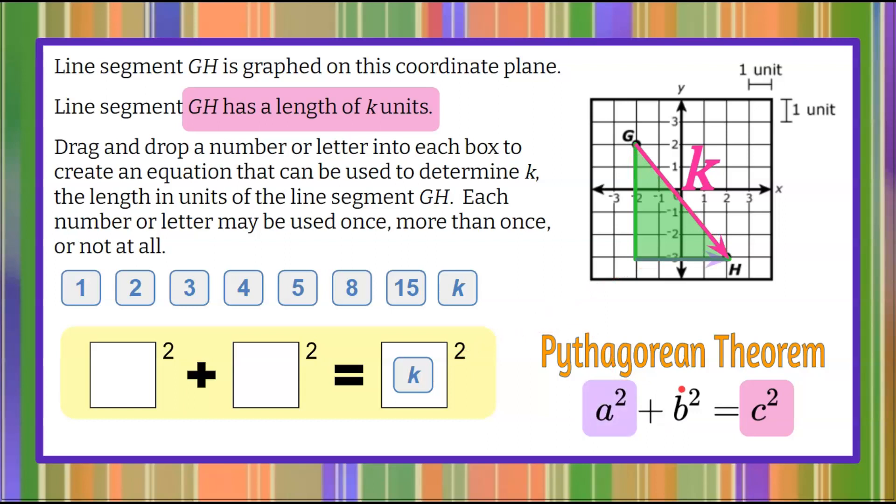Now we're looking for our legs. A, our first leg, our legs form the right angle. So A, this could also be B, they're interchangeable, but we'll use it as A, one, two, three, four units across. So A squared, A is four, putting four in the box, so four squared plus,